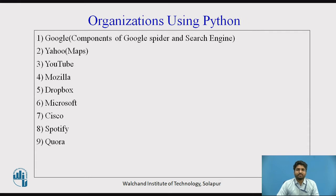Organizations using Python include Google, Yahoo, YouTube, Mozilla, Dropbox, Microsoft, Cisco, Spotify, Quora, and many more companies.